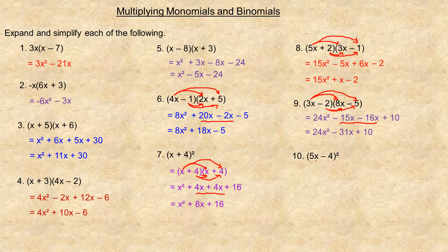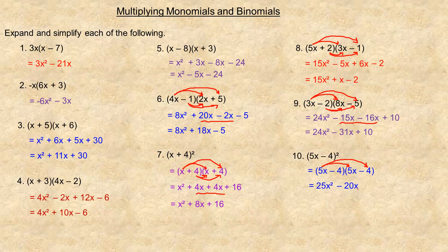For the last one, 5x minus 4 squared means two (5x − 4)s multiplied. 5x times 5x is 25x squared. 5x times negative 4 is minus 20x, and negative 4 times 5x is another minus 20x. Negative 4 times negative 4 is plus 16. The two middle like terms give negative 40x, so the final answer is 25x squared minus 40x plus 16.